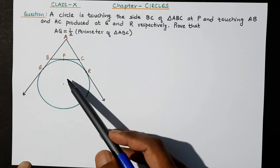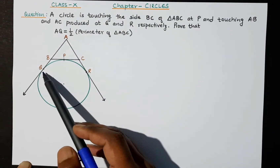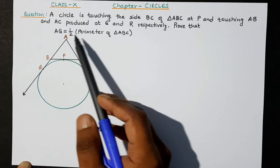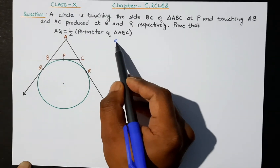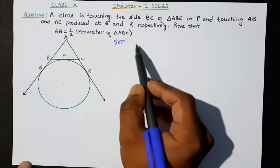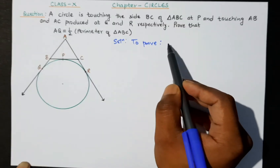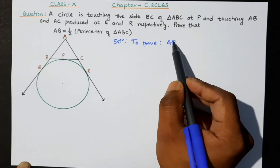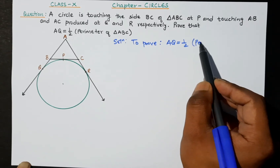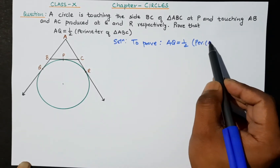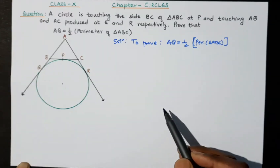So this figure is given, and we have to prove that AQ is equal to half the perimeter of triangle ABC.